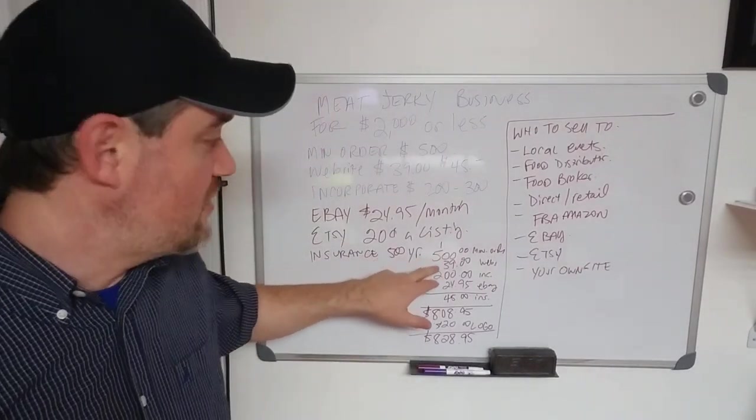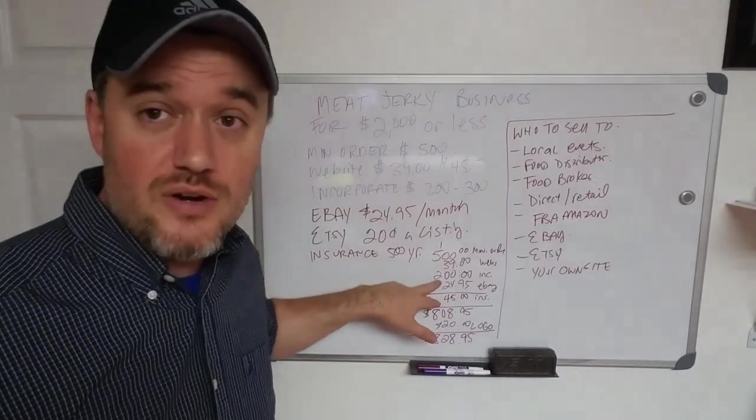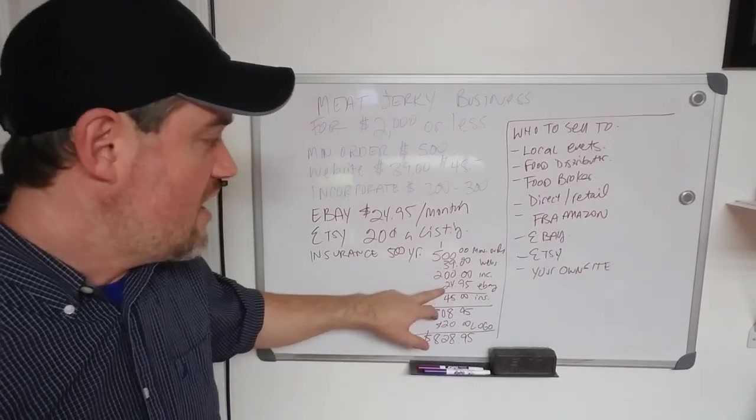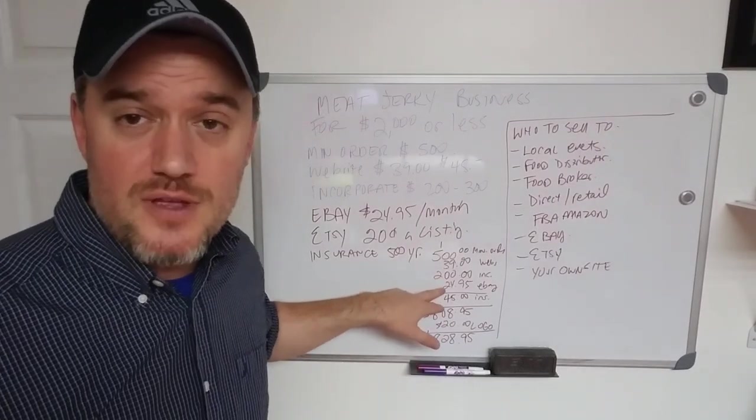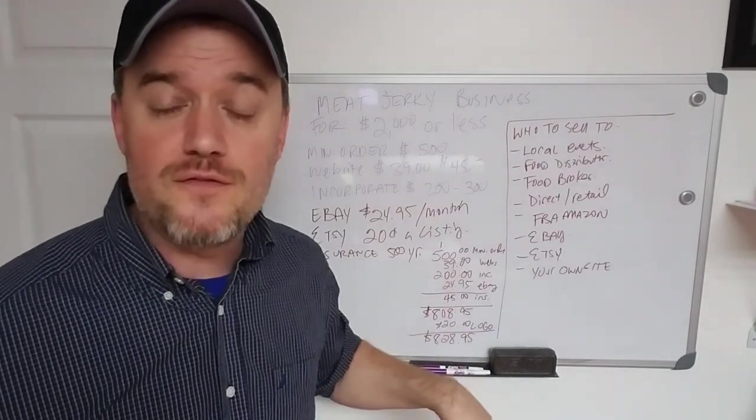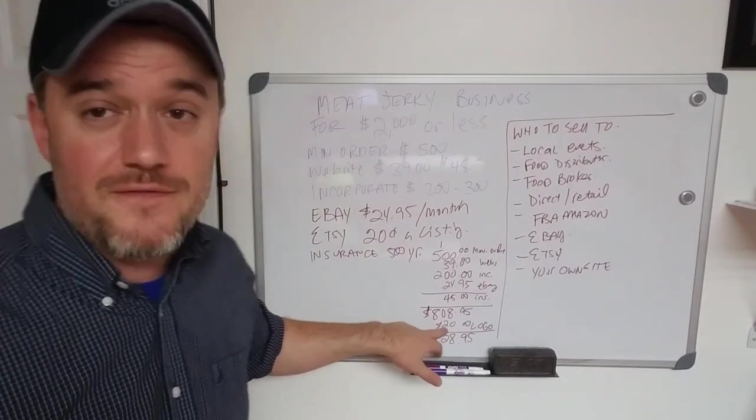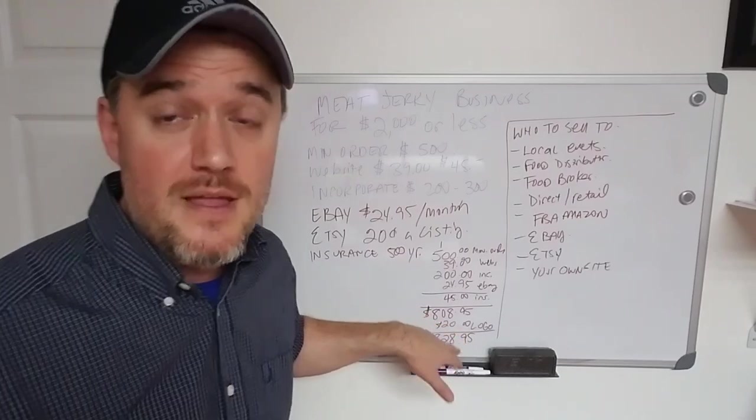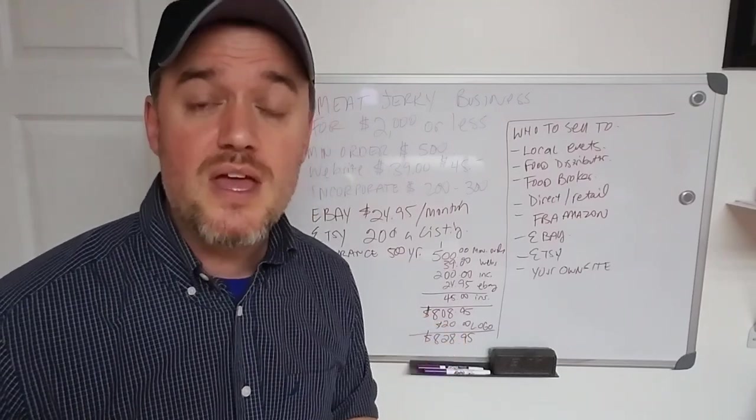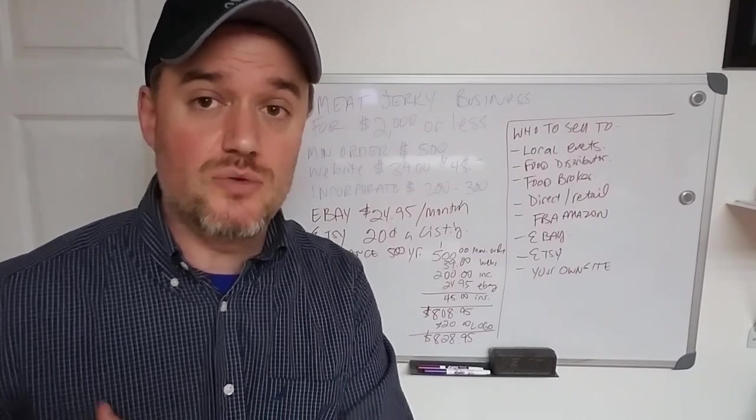So, $500 minimum, you've got $39 for your website, if you want to create your website, about $200 or so to incorporate yourself, and you've got about $25 up front for the monthly fee for eBay, if you want to start selling on eBay. A $45 monthly amount for the insurance, and your logo, if they don't have one and you want to create one, you can get one on Fiverr. Fiverr, you can get a really fantastic logo for even worth of $15 to $20, and Fiverr is a great place to get it contracted out to have somebody do it for you.